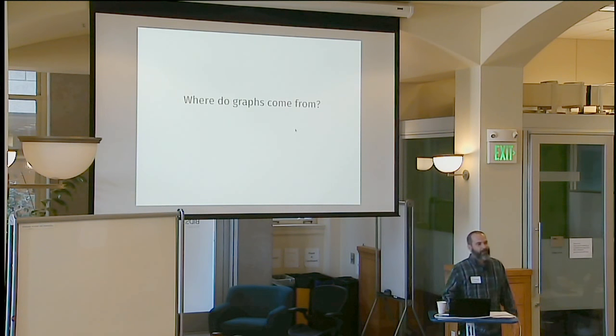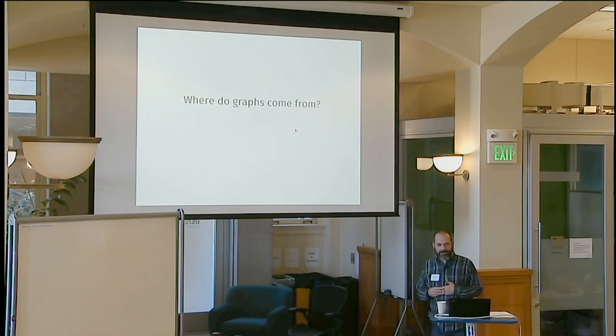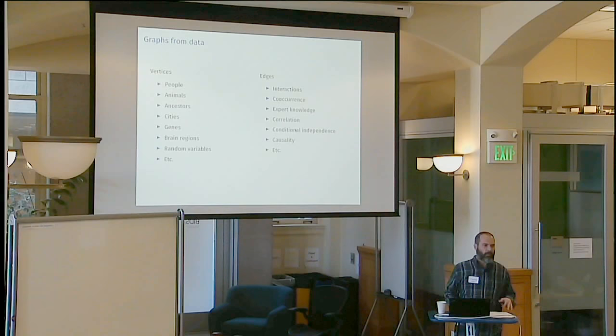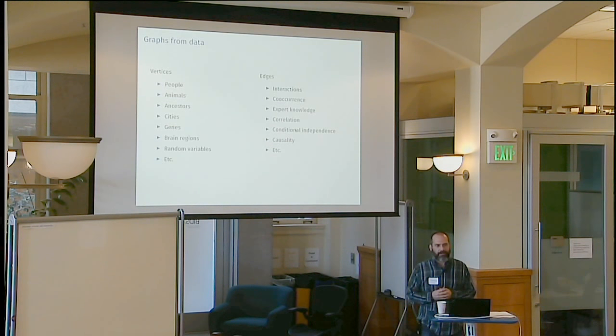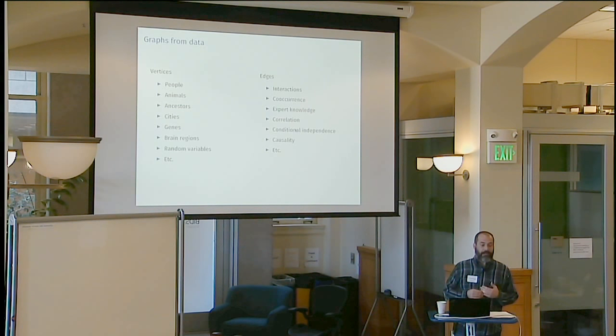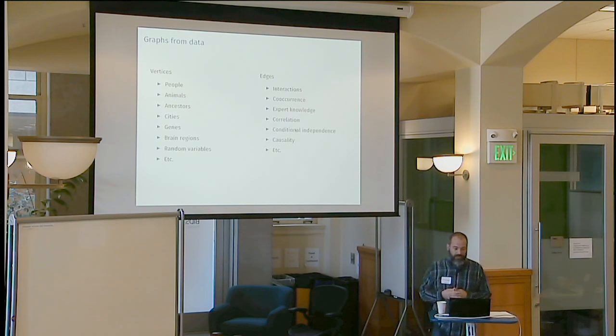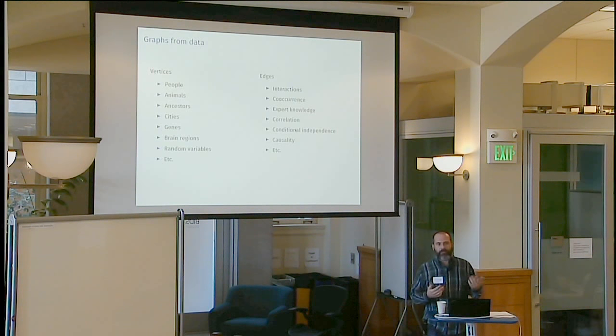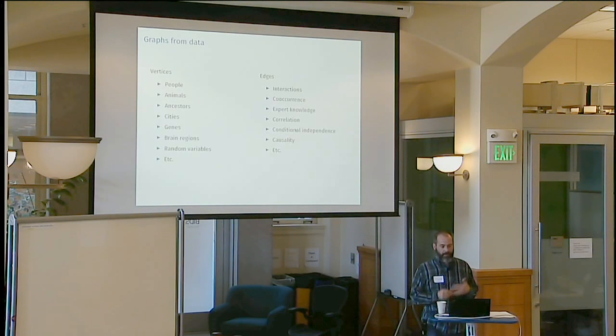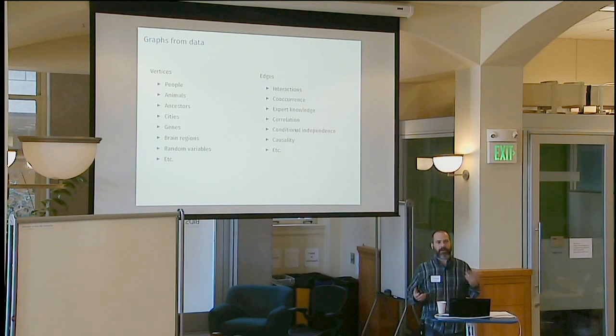Okay, so now we'll move away from the abstract idea of a graph to a more concrete example. And this is where we're going to get data in here. So first, where do graphs from data come from? We'll have lots of examples in the audience, in the talks, and we'll share those with each other. But just to give you some flavor of this, vertices might be things like people or animals, genes, brain regions, random variables, some more abstract things, some more concrete things. It's often the case that in applications, our vertices are kind of given to us, not always, but they're normally the things that we know, and then the edges are something we're trying to figure out what kind of edge we want.